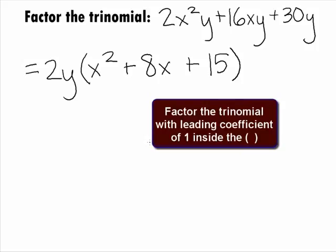Now, we have a trinomial with the leading coefficient of 1 inside the parentheses. At closer look, this one will factor, so we do need to continue with this problem. Basically, we are doing the reverse of the FOIL method.